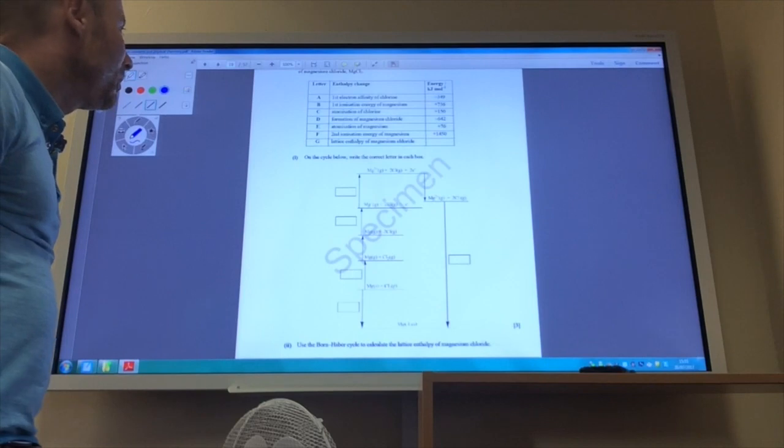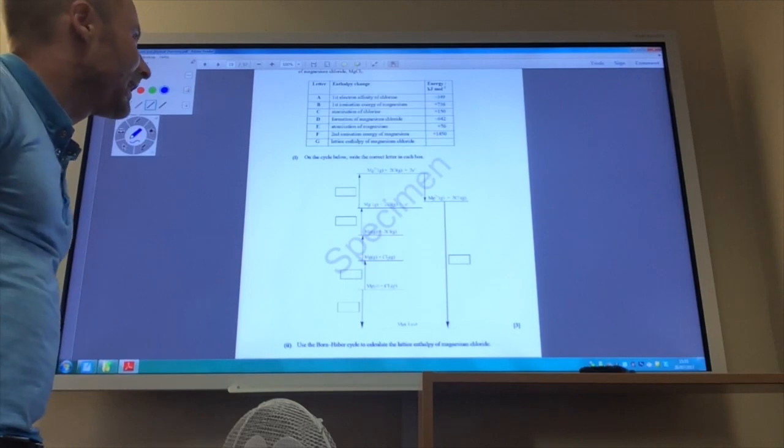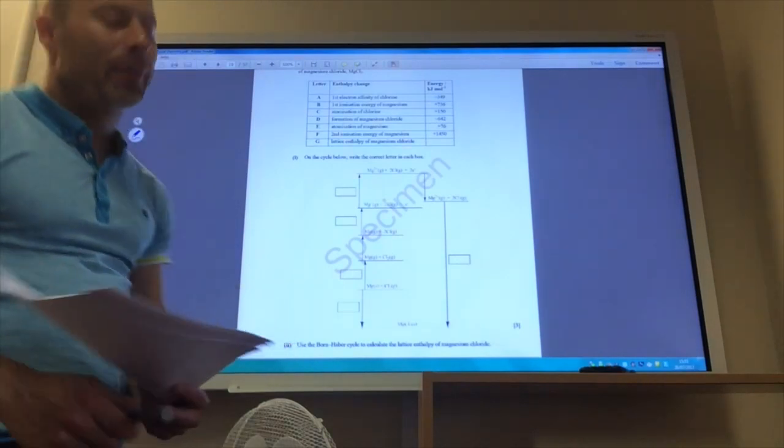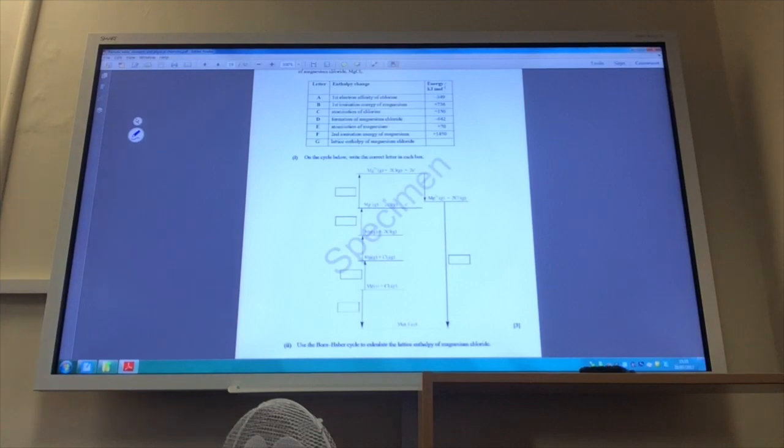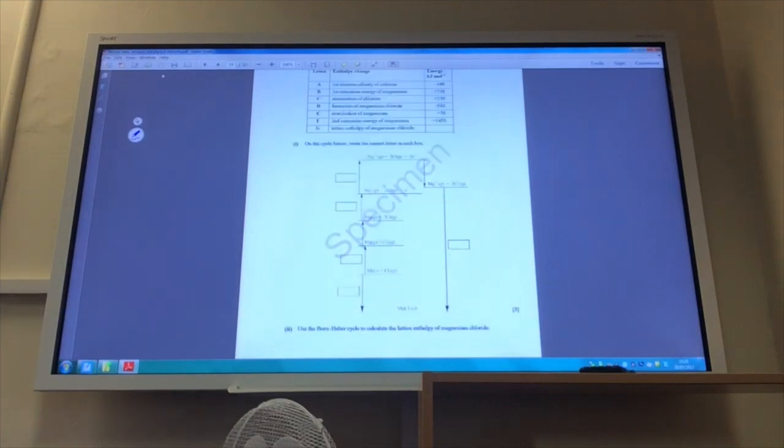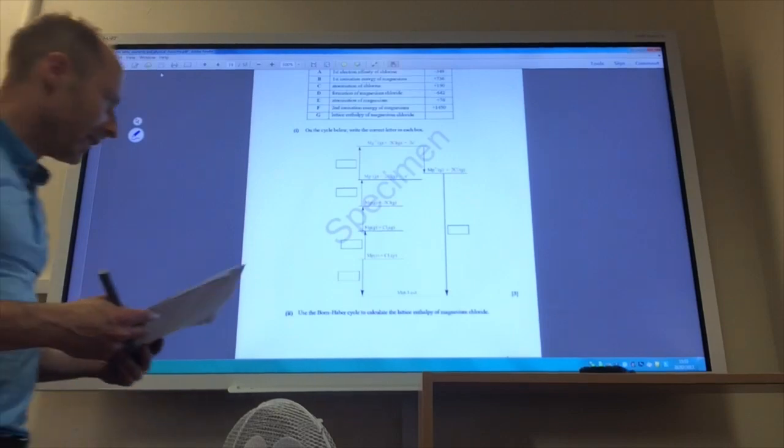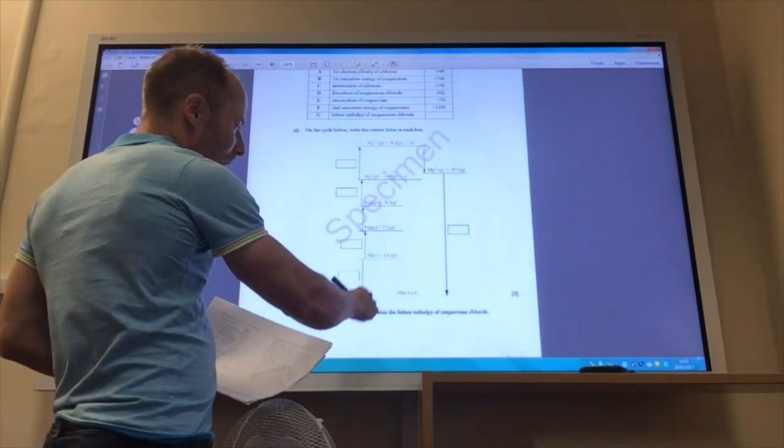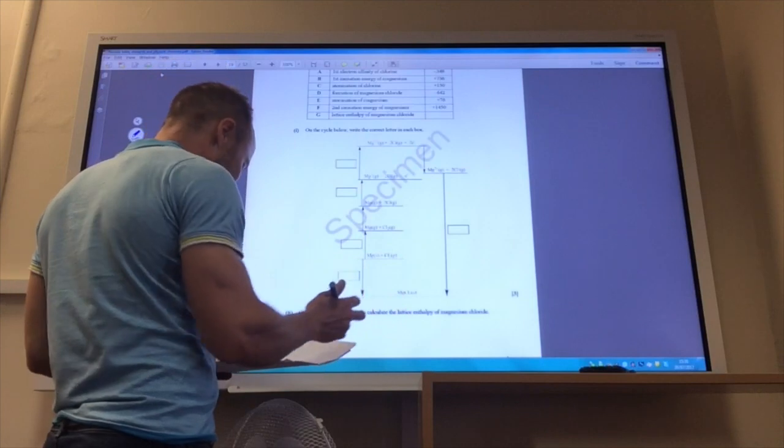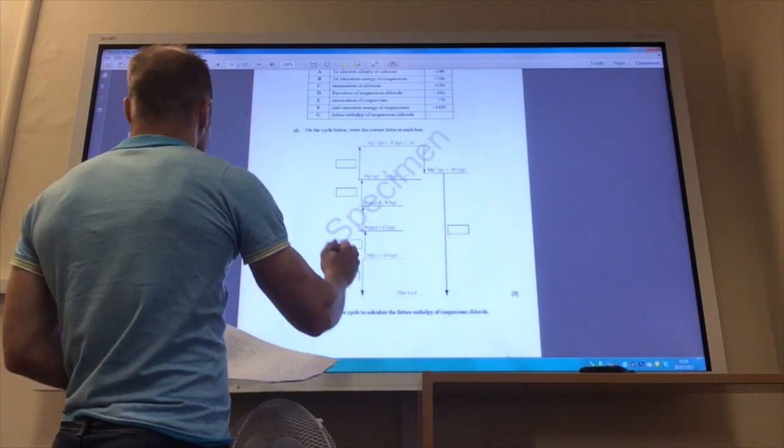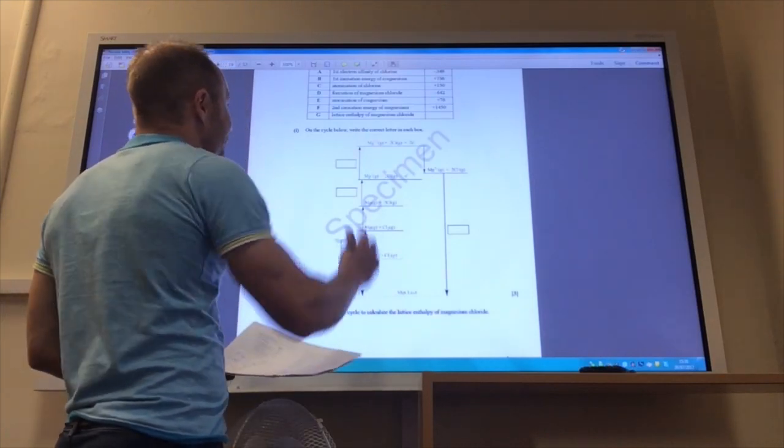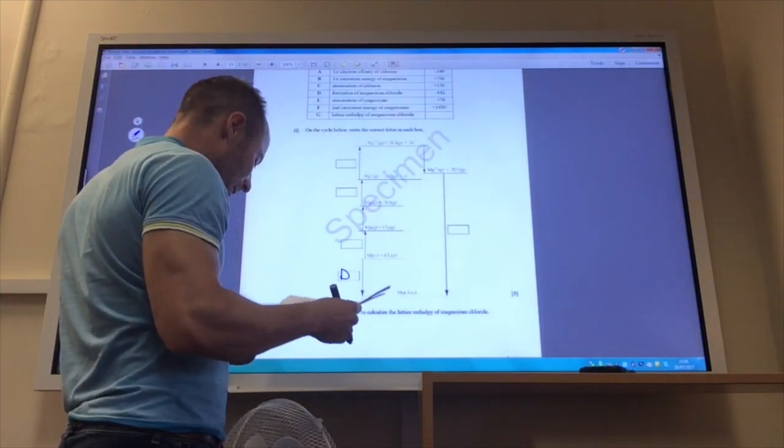Okay, so we're going to find a lattice enthalpy now of magnesium chloride. So, and it's given me some letters that it wants me to pop in the boxes. So first of all, this one, magnesium and chlorine becoming magnesium chloride, that is formation, so that is going to be D, formation magnesium chloride.